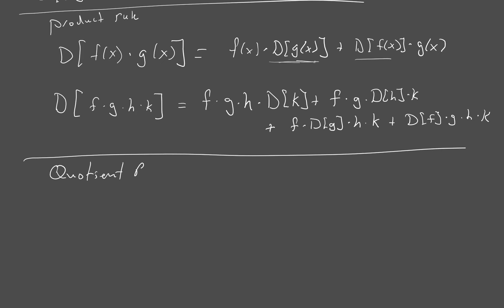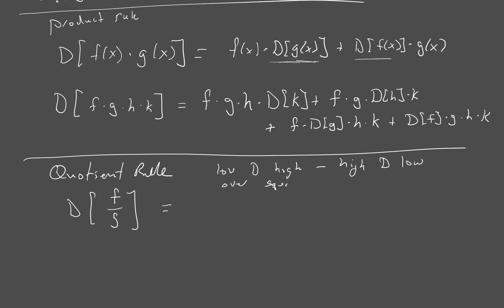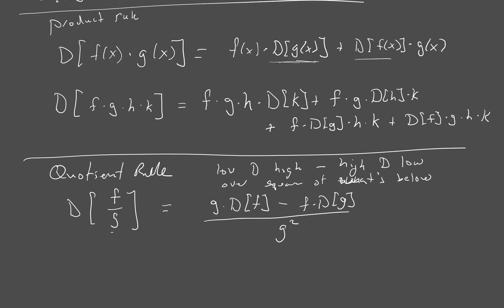The quotient rule: if I'm taking the derivative of a quotient f over g, I get low d high minus high d low, over the square of what's below. That says g times the derivative of f minus f times the derivative of g, all over g squared. So take the bottom times the derivative of the top, minus the top times the derivative of the bottom, all over the bottom squared.